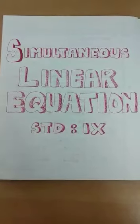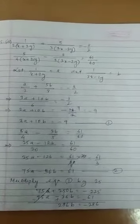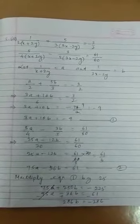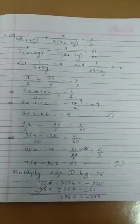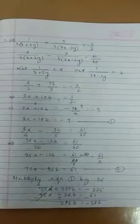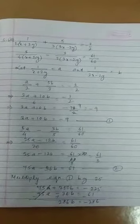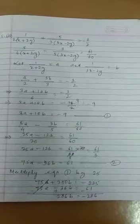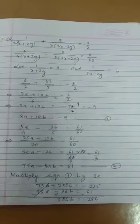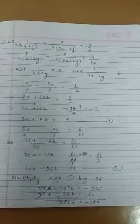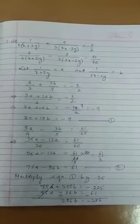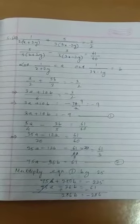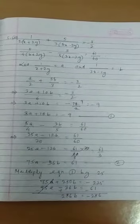Good morning children. See exercise 5.4, question number 5, second part. The question is: 1/2 into (x + 2y) + 5/3 into (3x − 2y) = −3/2, and 5/4 into (x + 2y) − 3/5 into (3x − 2y) = 61/60.